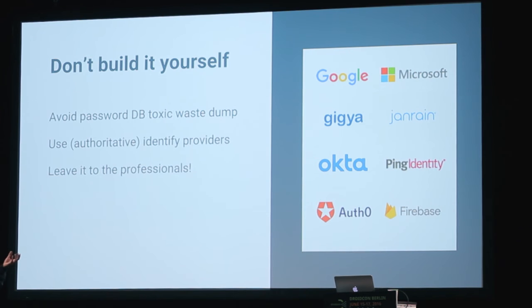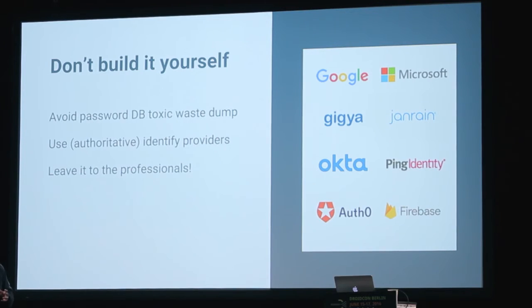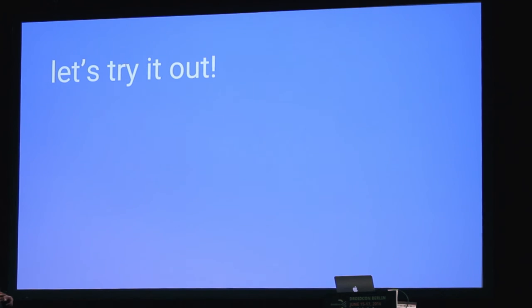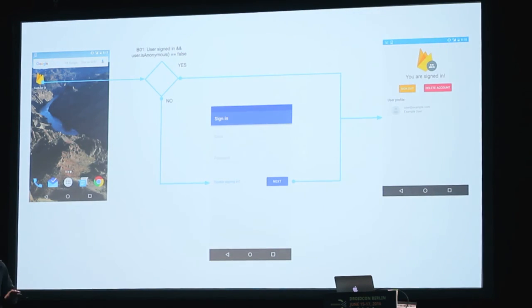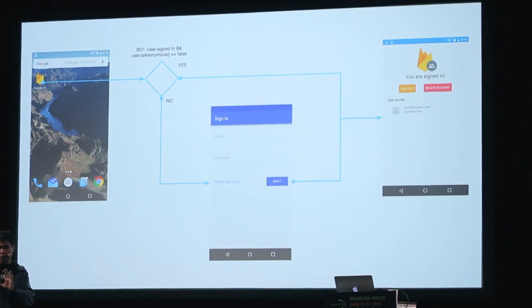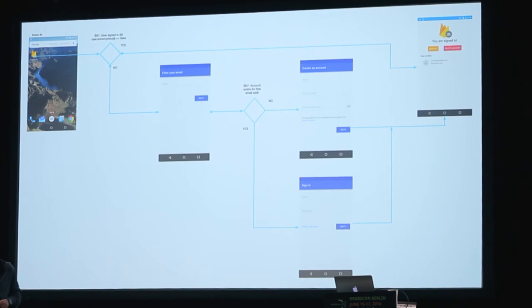There are libraries provided by Google, Microsoft, and identity-specific vendors built around these services. One provided by Google is called Firebase. Let's see what it would take to implement all of the practices I've talked about. We start by building a sign-in screen with the email and password field. Firebase actually provides a back-end service to keep the password database secure. And then we need to help people sign up — we've done the clever thing of asking for the email address first.